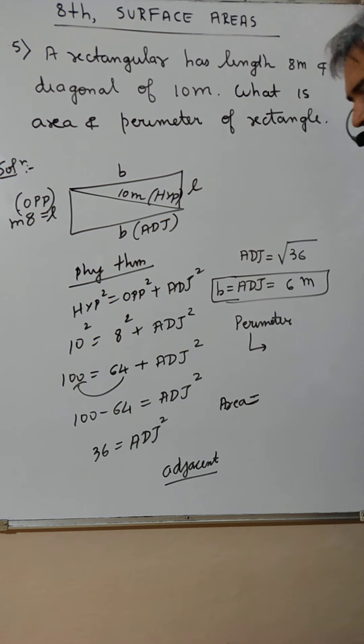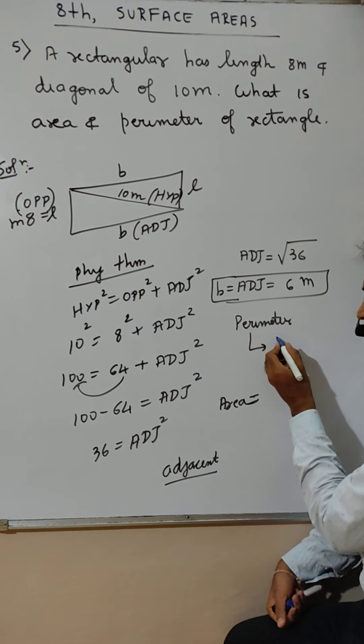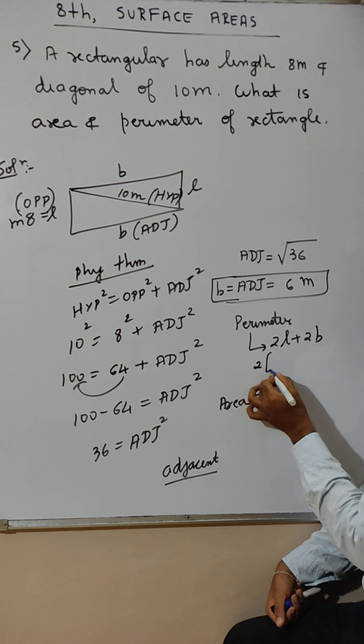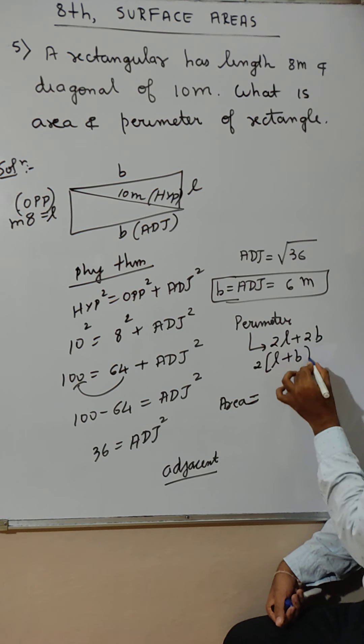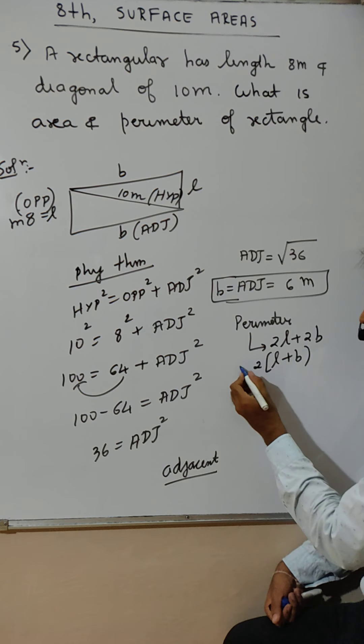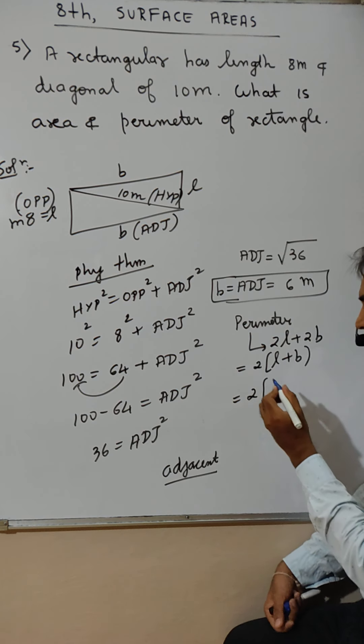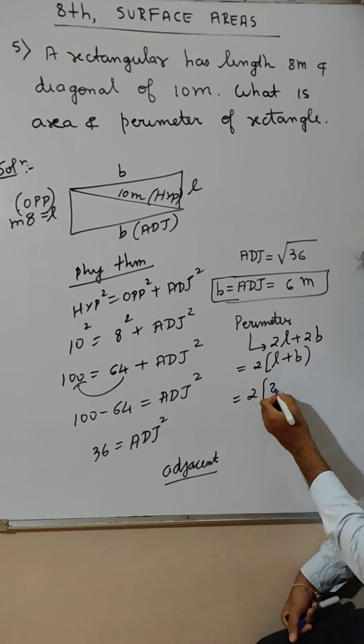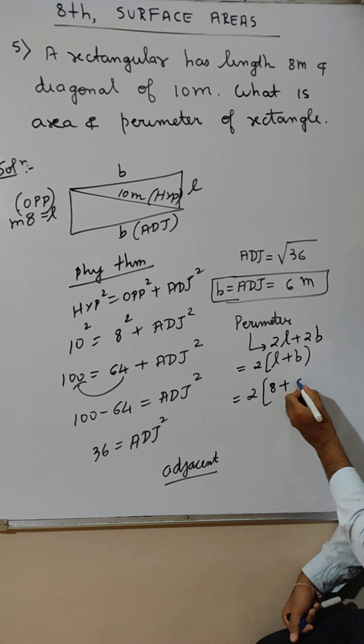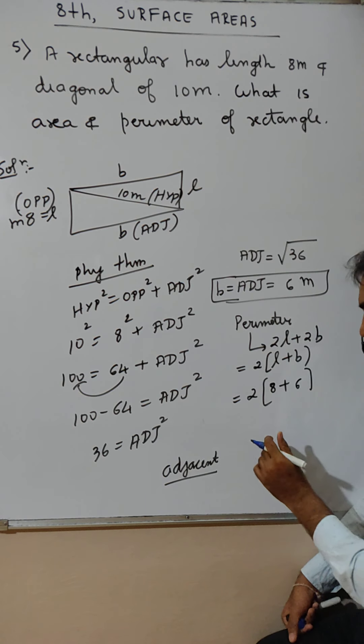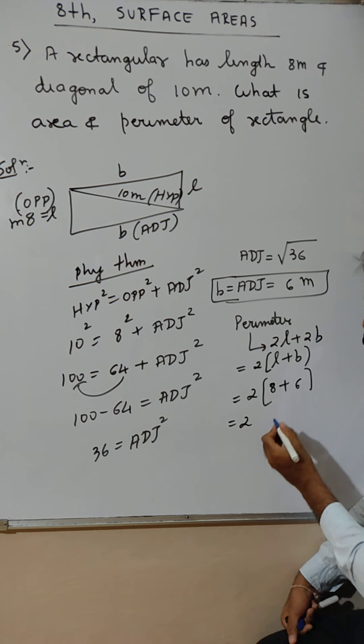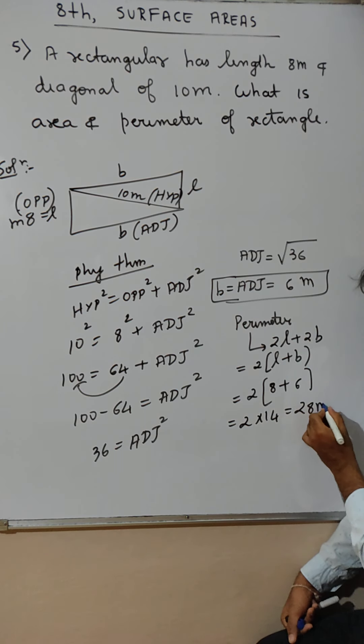L, L, B, B. Perimeter ka formula hai 2 bar L, 2 bar B. 2 common. L plus B. Correct or no? 2. Length. Length is what? 8. Breath 6. So kya milega? 8 plus 6, 14. Perimeter 28 meter.